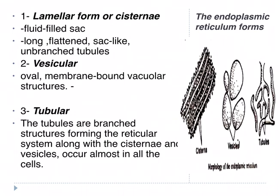Another type of the form of endoplasmic reticulum is the tubular form, which is a branched structure forming the reticular system. Along with the cisternal and vesicular forms, it occurs in almost all cells. This tubular form can also be seen in the figure of the endoplasmic reticulum.